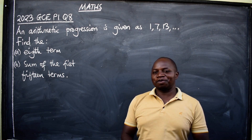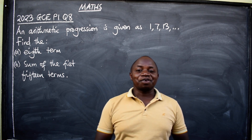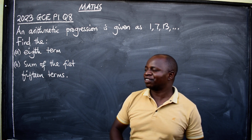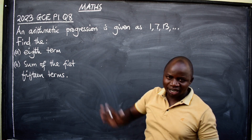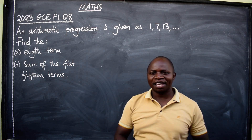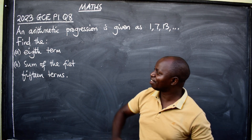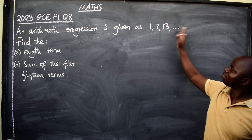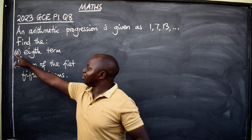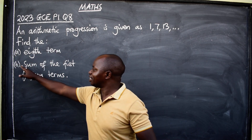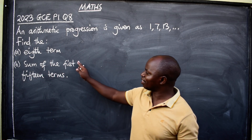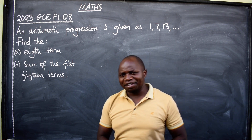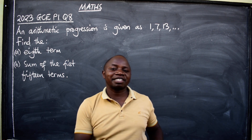Hello ladies and gentlemen, hope you are well. This is mathematics. In this video we want to answer this question coming from the 2023 GCE Paper 1, question number 8. An arithmetic progression is given as 1, 7, 13. Find: part (a) the eighth term, and part (b) the sum of the first 15 terms. What topic is this? This is coming from sequences and series.